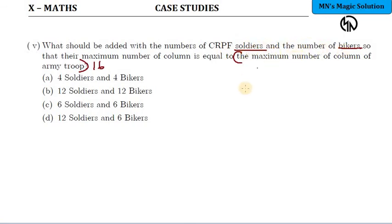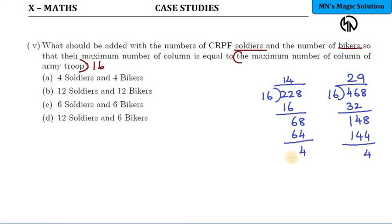Last question, it was subtracted. Here it is added. So it is the same division that you can use here. So in the division sequence, what to add so that it becomes exactly divisible by 16? Obviously it is 12.